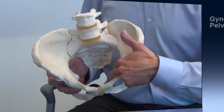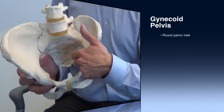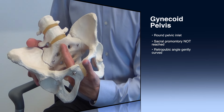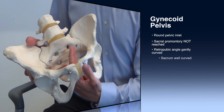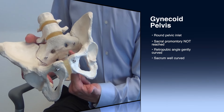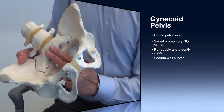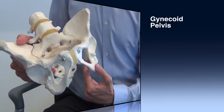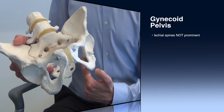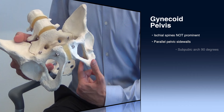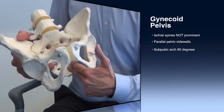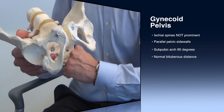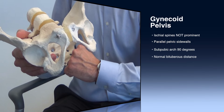On clinical pelvimetry, the round pelvic inlet of the gynecoid pelvis is associated with the sacral promontory not being reached and a retropubic angle that gently curves back. The sacrum is well curved, and the ischial spines are not prominent. The pelvic sidewalls are parallel, the subpubic arch approaches 90 degrees, and the bituberous distance is normally greater than four knuckle breadths.